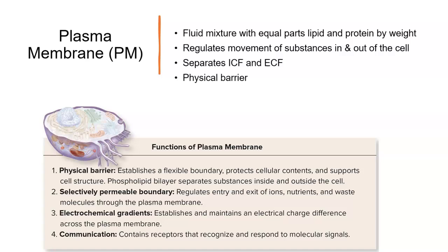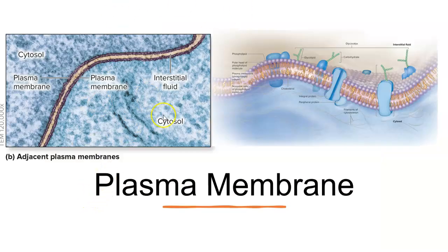Cells also have receptors that allow them to recognize other cells, but also to respond to molecular signals from other cells. Before we look at the image on the left, let's take a quick look at this piece of cell membrane in the image on the right. The cell membranes are made of a phospholipid bilayer, and we're going to examine that in great detail.